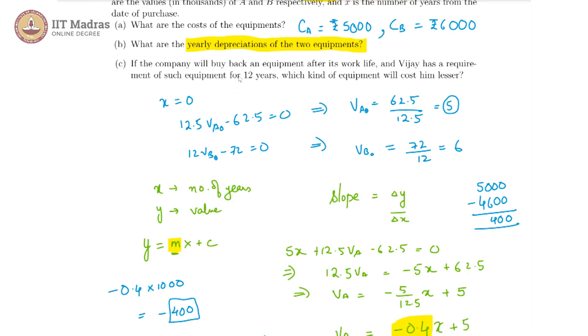In the last part, it is said that the company will buy back the equipment after its work life and Vijay has a requirement of such equipment for 12 years. Which kind of equipment will cost him lesser? In the case of the first equipment, let us call it case A, and here let us have case B to consider. In case A, the initial cost was 5,000 rupees and each year there is a decrease of 400 rupees. So in first year we lose this much, in the second year we lose another 400 rupees, and at the end of the third year there is a loss of another 400 rupees.